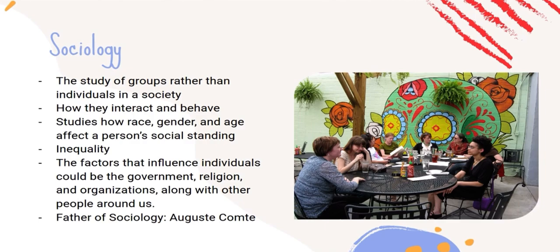First off, we have sociology. This is the study of groups rather than individuals in a society. It focuses on how people in these groups interact and behave, and it also studies how race, gender, and age affect a person's social standing. For example, these factors could lead to inequality, where someone is treated differently among other individuals in their group. The factors that influence individuals could be the government, religion, and organizations, along with other people's behaviors around us.